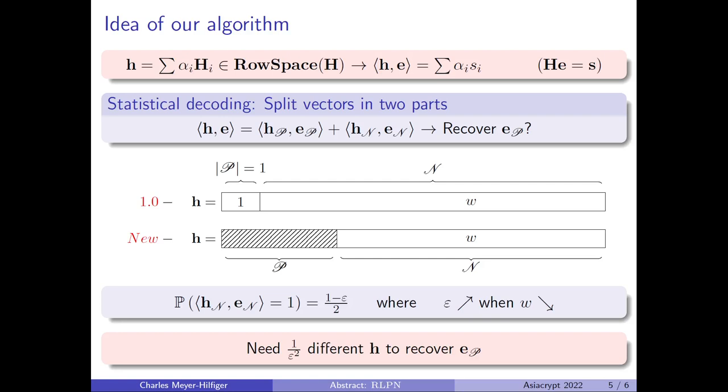Now, the main idea of statistical decoding is splitting the vectors in two parts, P and N, that are complementary. And we can rewrite h dot product e as h_P dot product e_P plus h_N dot product e_N. And then, we want to recover e_P.